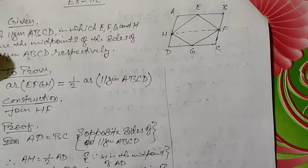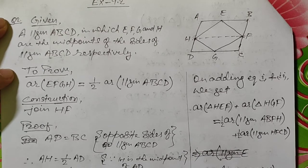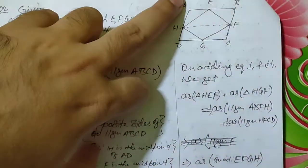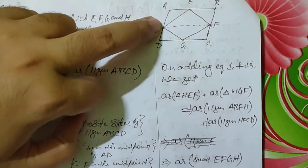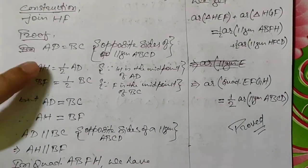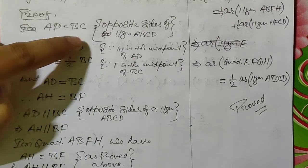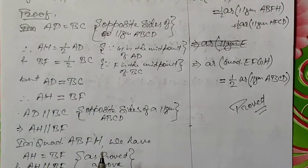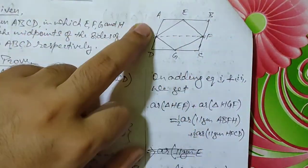Now let us start the proof. AD equals BC as opposite sides of parallelogram ABCD. Therefore AH equals half of AD and BF equals half of BC. Since AD equals BC, we can write AH equals BF — because both are half of equal quantities, they are equal to each other. So we have shown that AH equals BF, one condition to make ABFH a parallelogram.